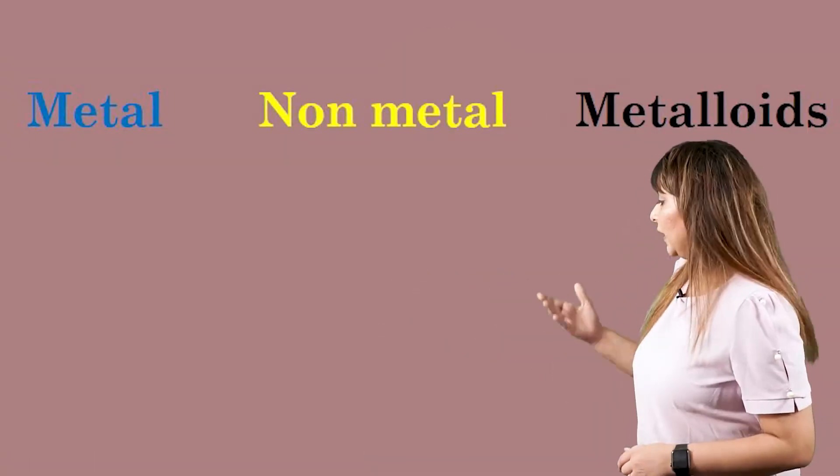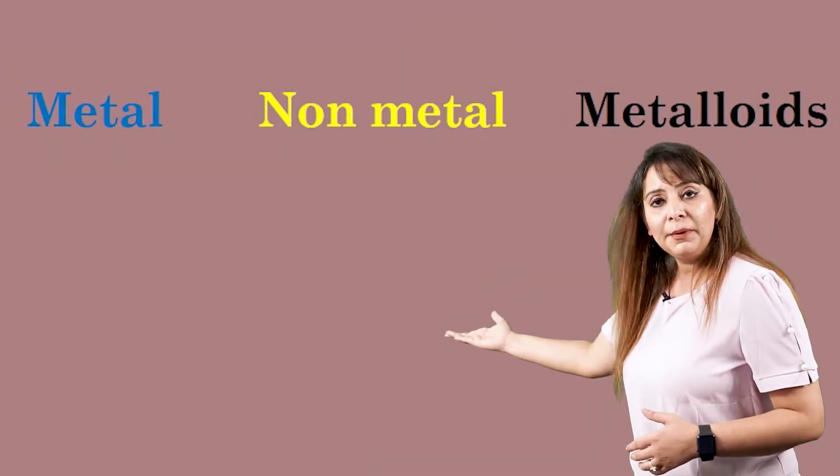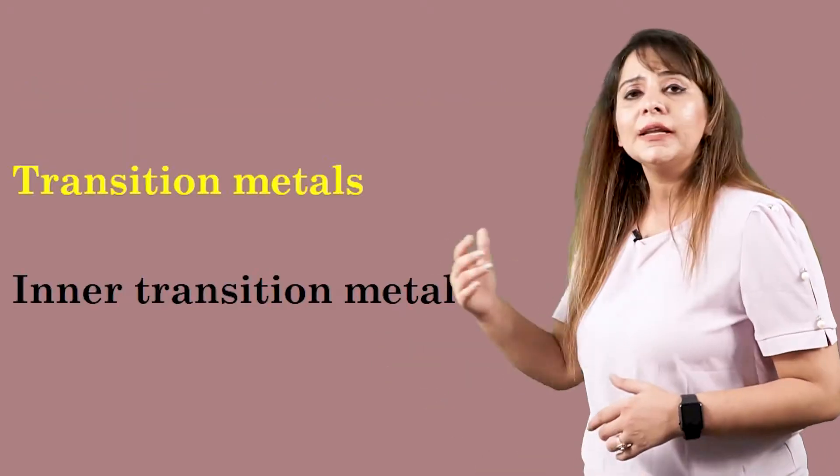Elements are basically divided into different categories depending upon their properties — they can be metal, non-metal, metalloid, transition metal, or inner transition metal. Now we are going to start with the detailed study of metals and non-metals. The first thing I would like to ask is: what do we mean by metal?